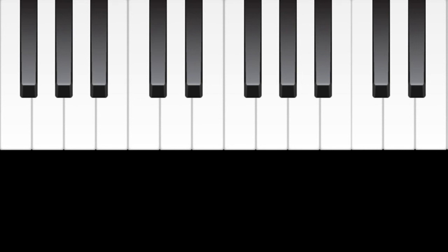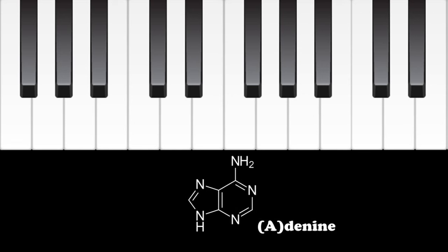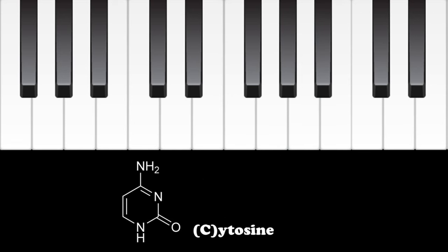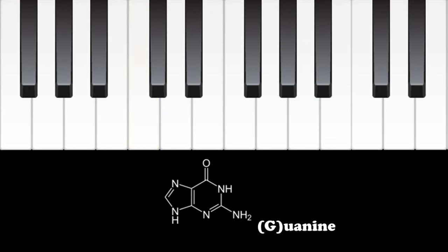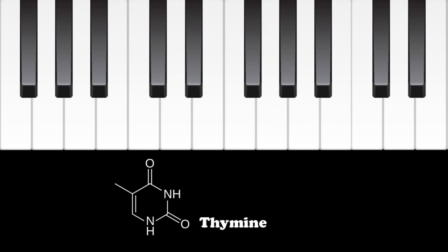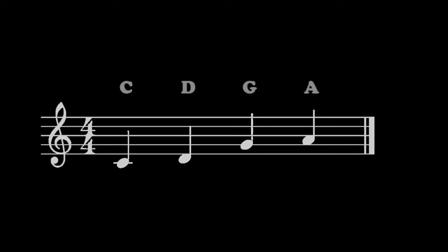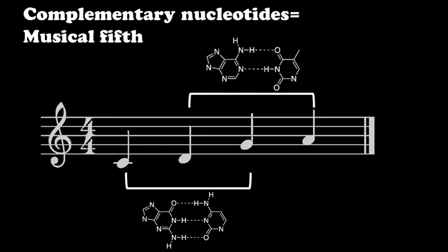Once we had the DNA sequence, we needed to decide which notes to turn the nucleotides into. We decided it would be most fitting to turn adenines into the note A, cytosines into C's, guanines into G's, and thymines into D's. This created a four-note tetratonic scale that roughly correlates to C major. Complementary base pairs such as C and G and A and T are a musical fifth apart.